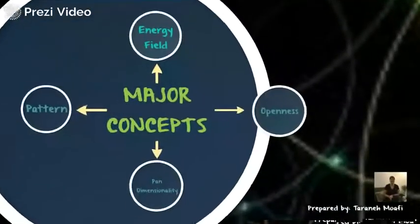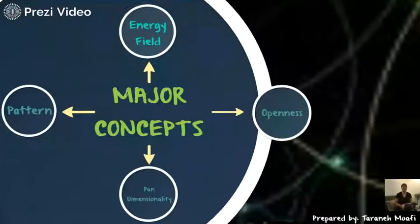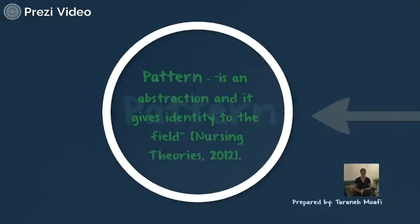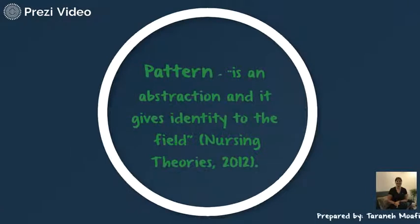Let's go to the major concepts. Martha Rogers mentioned four major concepts in her theory. The first one is pattern. Rogers defined pattern as the distinguishing characteristic of an energy field seen as a single wave. It is an abstraction and gives identity to the field.